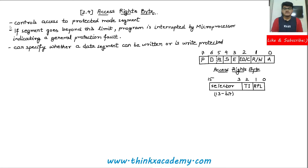Here I have written three points about access rights byte. The first one says that it controls the access to the protected mode segment. This is actually a byte — one byte equals eight bits — so it is an eight-bit access rights byte. It controls access to the protected mode segment. In the protected mode, we cannot use the segment address directly, so we find the address using selectors and descriptors. For that, we make use of the access rights byte, which gives access to the segment address so that the microprocessor can address the instruction.